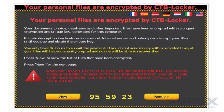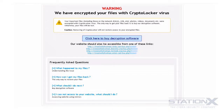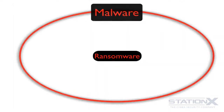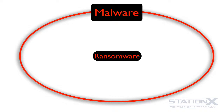CryptoWall, CBT Locker, and Torrent Locker are the most prevalent at the moment. Your options are to pay the ransom, attempt to crack the encryption — which has had only minor success so far — or lose the files. Most people pay, as hackers tend to keep the ransom amount relatively low. Payment is via cryptocurrency such as Bitcoin, which is relatively untraceable. Ransomware will likely surge in the near term due to its high profit margins and the relatively simple chain of people involved.